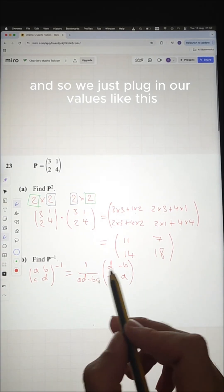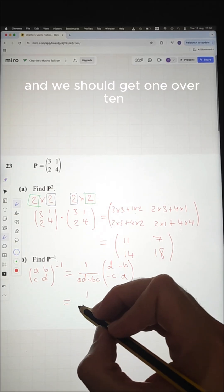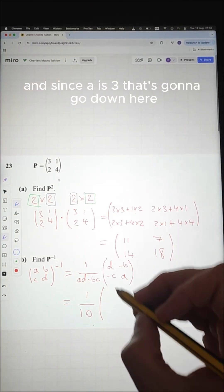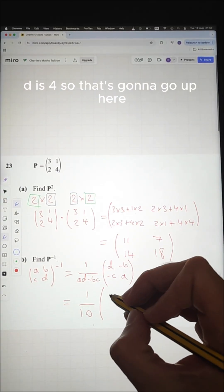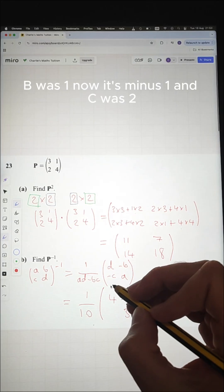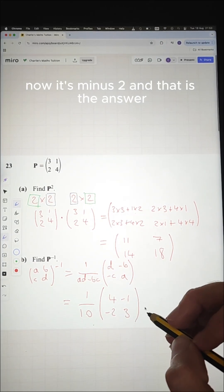And so we just plug in our values like this. And we should get one over 10. And since A is three, that's going to go down here. D is four, so that's going to go up here. B was one, now it's minus one, and C was two, now it's minus two. And that is the answer.